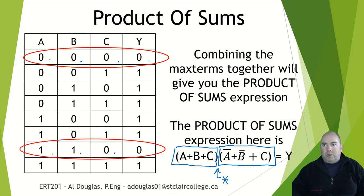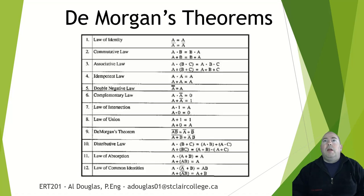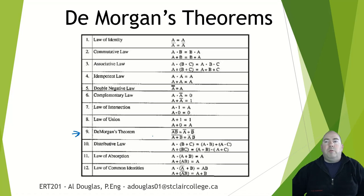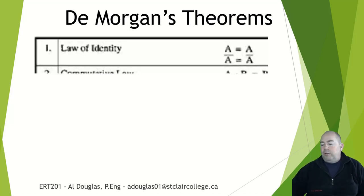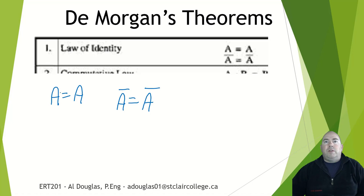We won't get into this too much — just understand what we're talking about here. What we will use a lot in simplifying expressions is what we're going to call De Morgan's Theorems. There are 12 laws that we will use for working with Boolean expressions, so we're going to go through each of these and talk about which ones are the key ones we'll be using a lot. Some of these are very straightforward. The first one is the law of identity — that is just saying that A equals A, and A-bar equals A-bar. Any term or input you have is equal to that term.